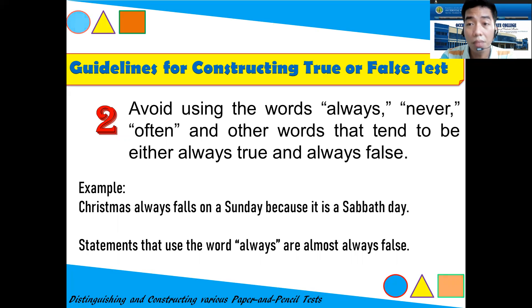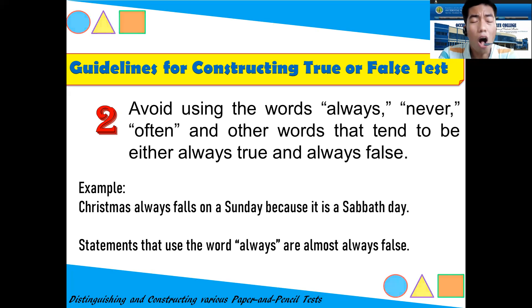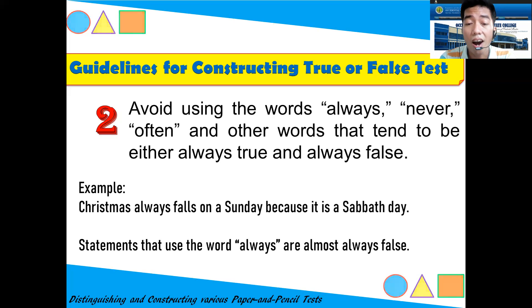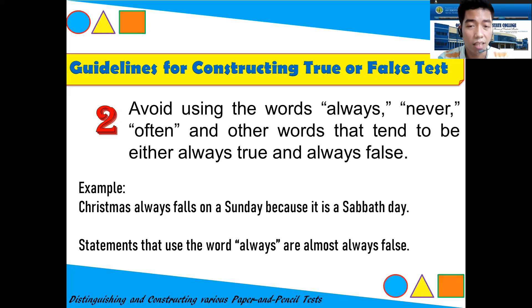Guideline two: Avoid using words like 'always,' 'never,' 'often,' and other words that tend to make statements either always true or always false. For example: 'This was always false on Sunday because it is Sabbath day.' Statements using the word 'always' are almost always false, because not all scenarios can be universally true.